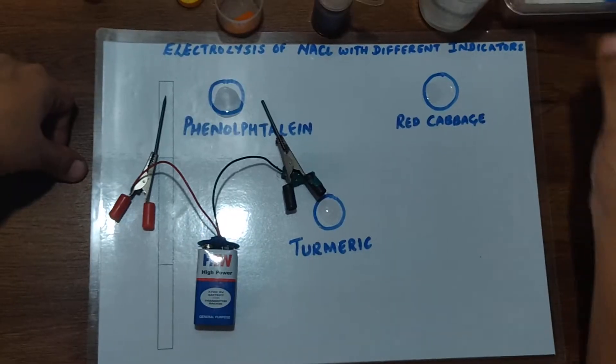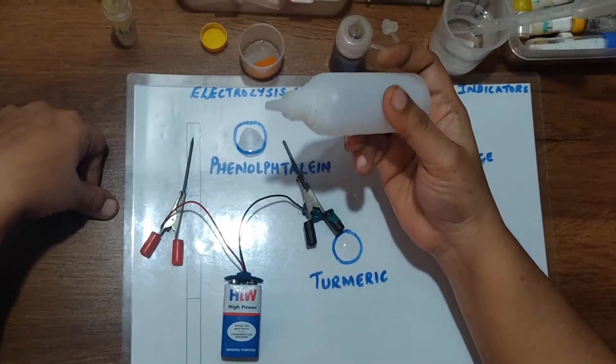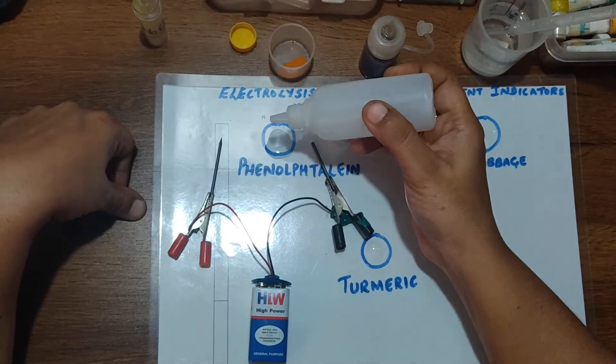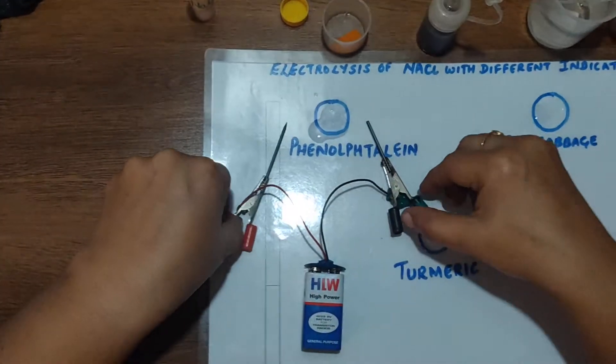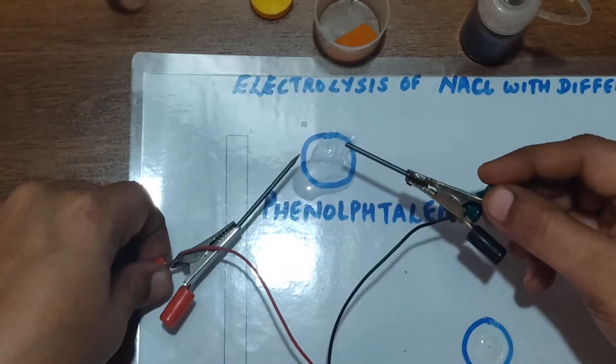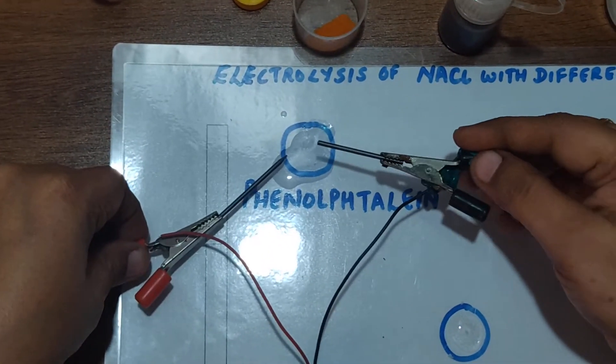Now I'm going to add in the first circle a drop of phenolphthalein, and let me just put the graphite rods. Make sure they don't touch each other.